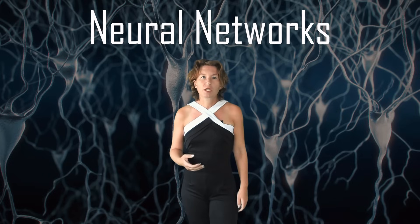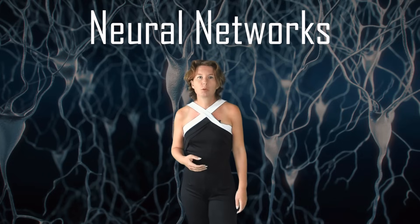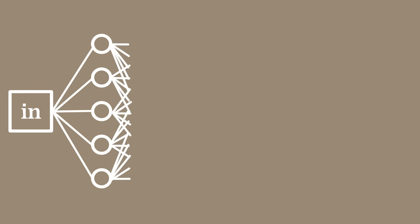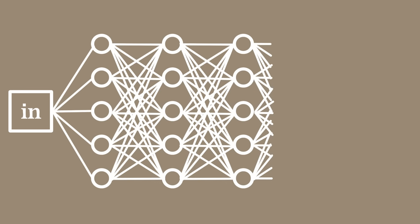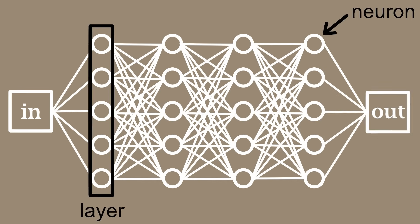Before we can talk about this, I have to briefly tell you what artificial intelligence refers to. What goes as artificial intelligence today are neural networks. A neural network is a computer algorithm that imitates certain functions of the human brain. It contains virtual neurons arranged in layers, which are connected with each other. The neurons pass on information and thereby perform calculations, much like neurons in the human brain.